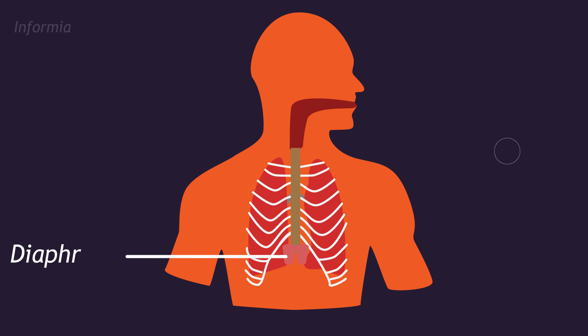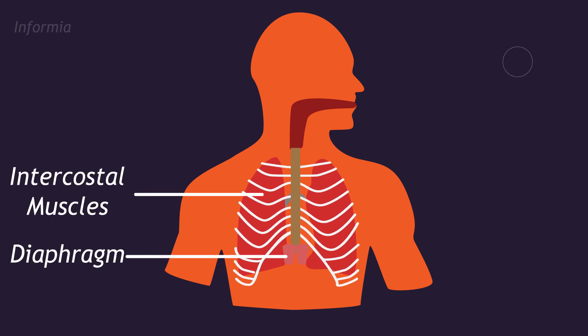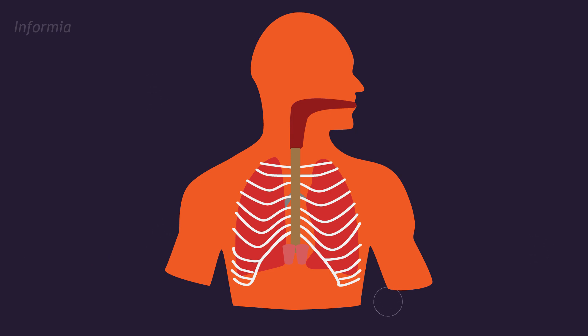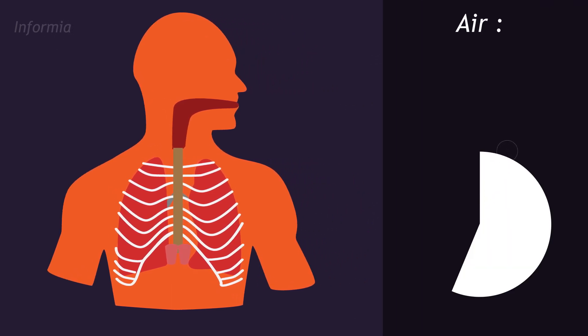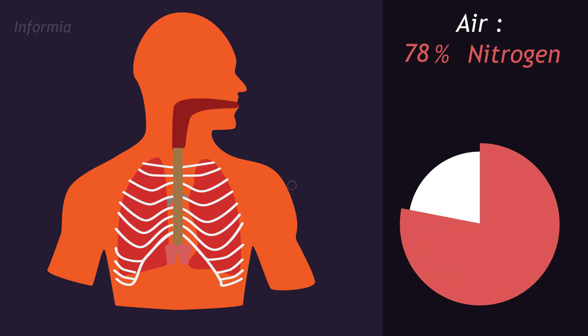When you inhale, your diaphragm and the muscles between your ribs, called the intercostal muscles, contract, forcing your chest cavity to expand. When this happens, the pressure in your chest cavity decreases past the outside air pressure, which will make all the air from outside your body rush into your lungs. Atmospheric air has about 78% nitrogen, 21% oxygen, and 1% argon.